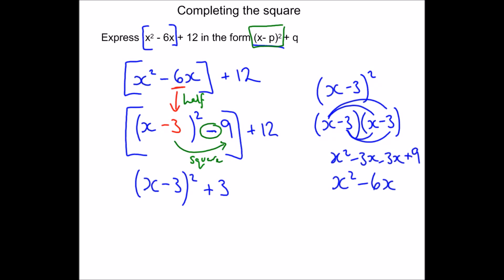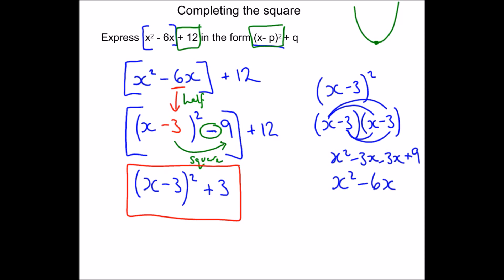You might be wondering why we want it in this particular form. What's quite nice about this form is it tells us the coordinates of the minimum point of the quadratic. We've got a positive x squared, which means we're going to have a u-shaped quadratic. Because we have plus 12 at the end it's going to cross the y-axis at 12. But we might want to know where the bottom of the quadratic is — and by thinking about our completed square expression, the bracket is squared so it must be positive or zero; you can't get a negative number by squaring.